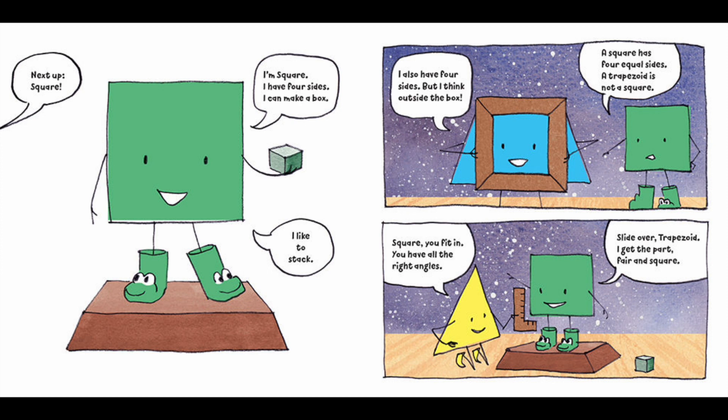Next up, square. I'm square. I have four sides. I can make a box. I like to stack. I also have four sides. But I think outside the box. A square has four equal sides. A trapezoid is not a square.